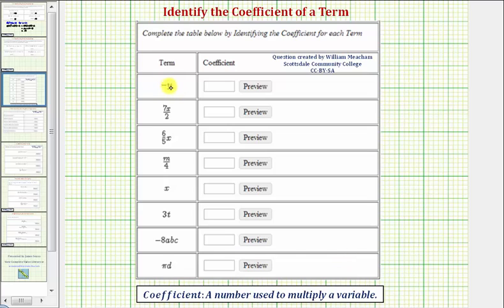So looking at our first term here, negative y, we can think of this as negative one y, which means negative one times y, and therefore the coefficient is negative one.